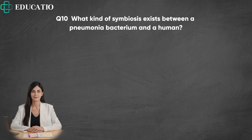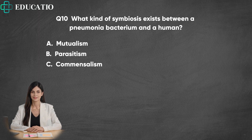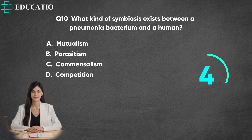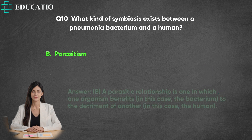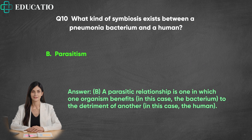Question 10. What kind of symbiosis exists between a pneumonia bacterium and a human? A. Mutualism. B. Parasitism. C. Commensalism. D. Competition. Answer: B. A parasitic relationship is one in which one organism benefits — in this case the bacterium — to the detriment of another, in this case the human.